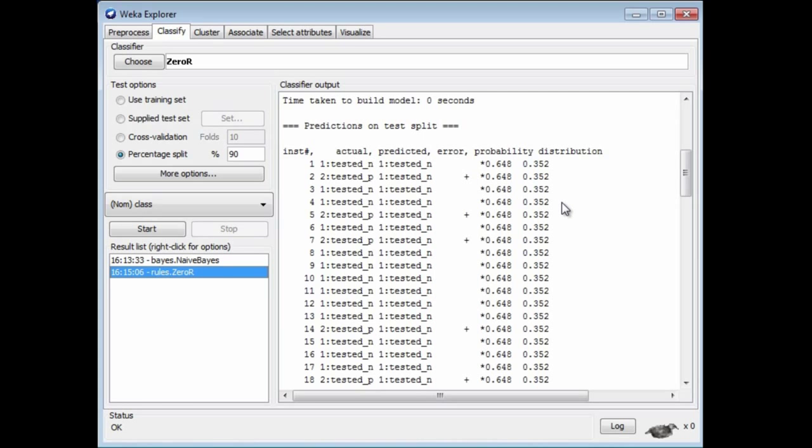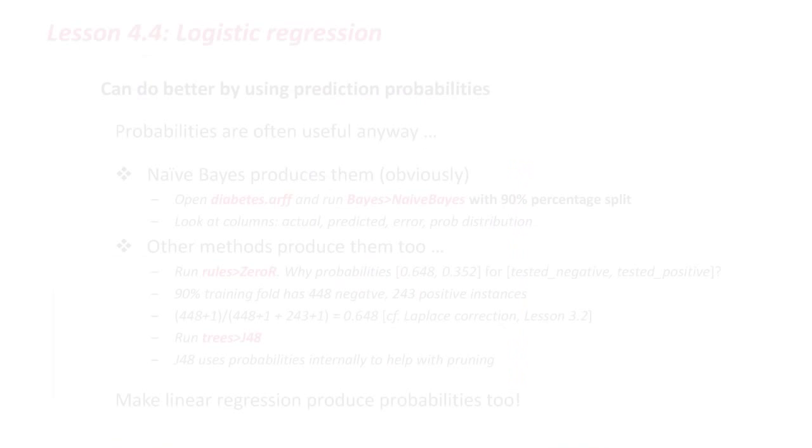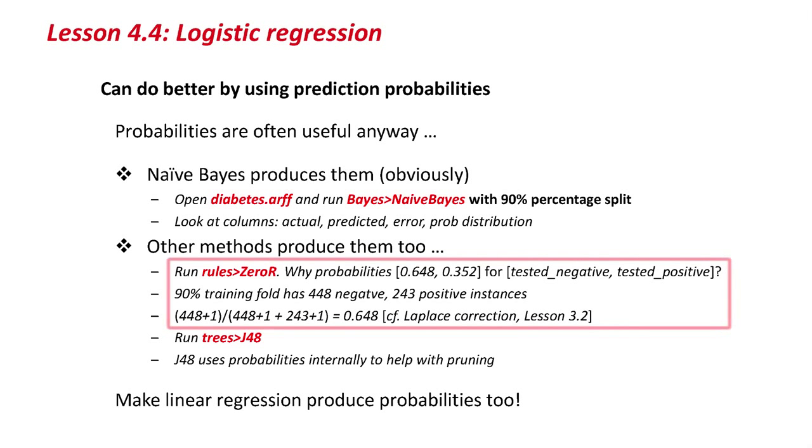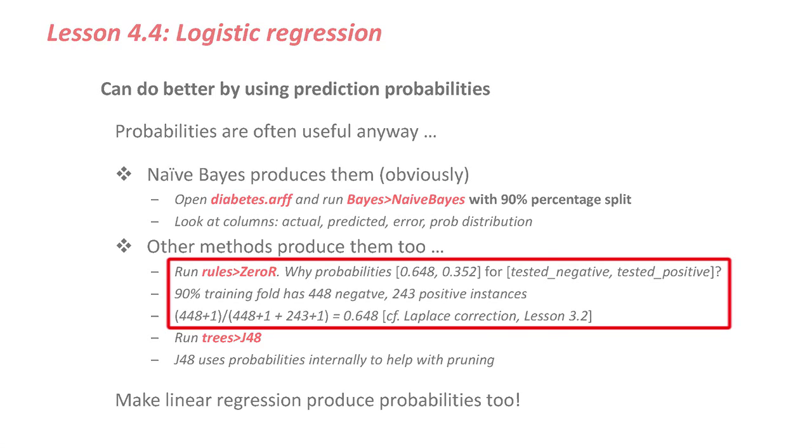In this case, this has the same probabilities. The reason why the numbers are like that, if you look at this slide here, is that we've chosen a 90% training set and a 10% test set. The training set contains 448 negative instances and 243 positive instances. Remember the Laplace correction? In Lesson 3.2, we add 1 to each of those counts to get 449 and 244. That gives us a 65% probability of being a negative instance. That's where these numbers come from.